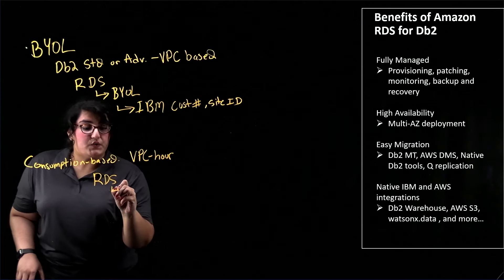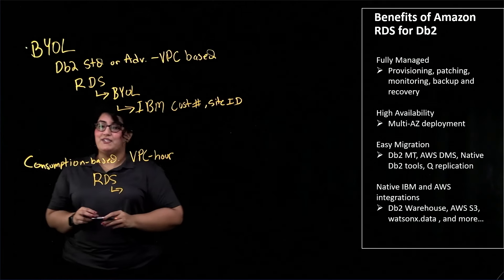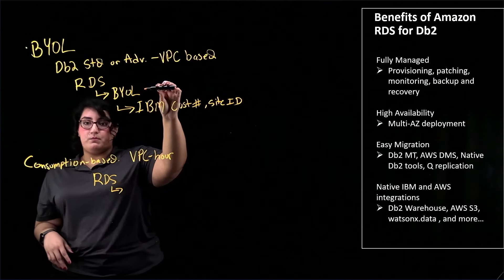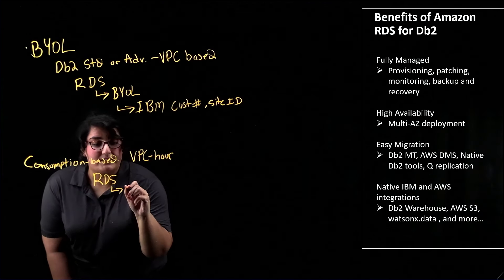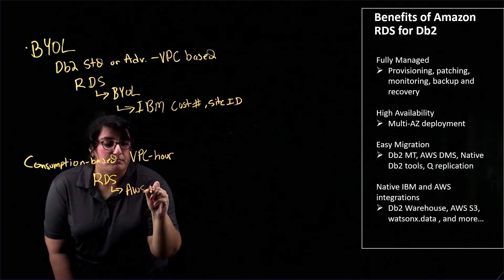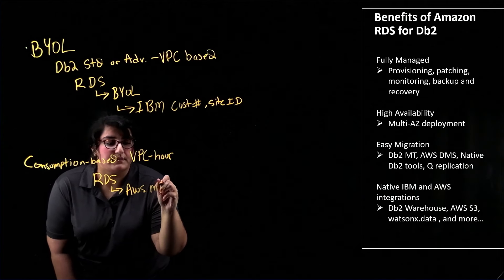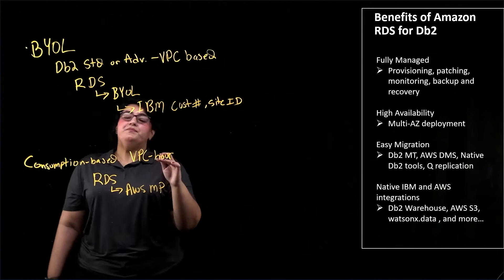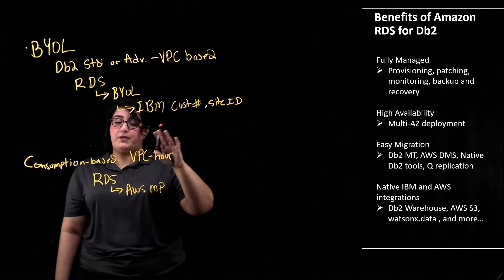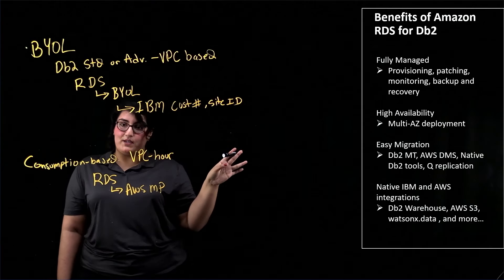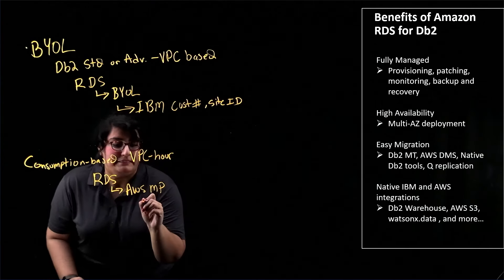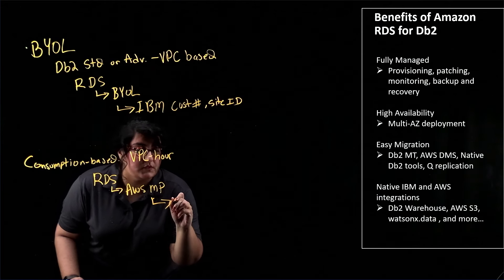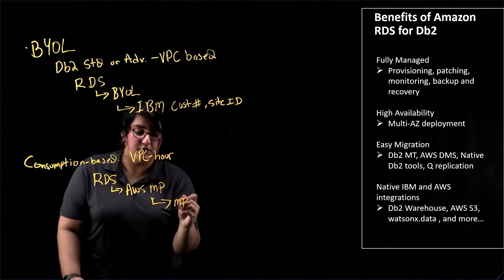From the RDS console, again go ahead and select IBM DB2. Like before where you selected BYOL, here you're going to select from the AWS Marketplace. Once you select that, scroll down and it will take you to the Marketplace page where you can finish your purchase.